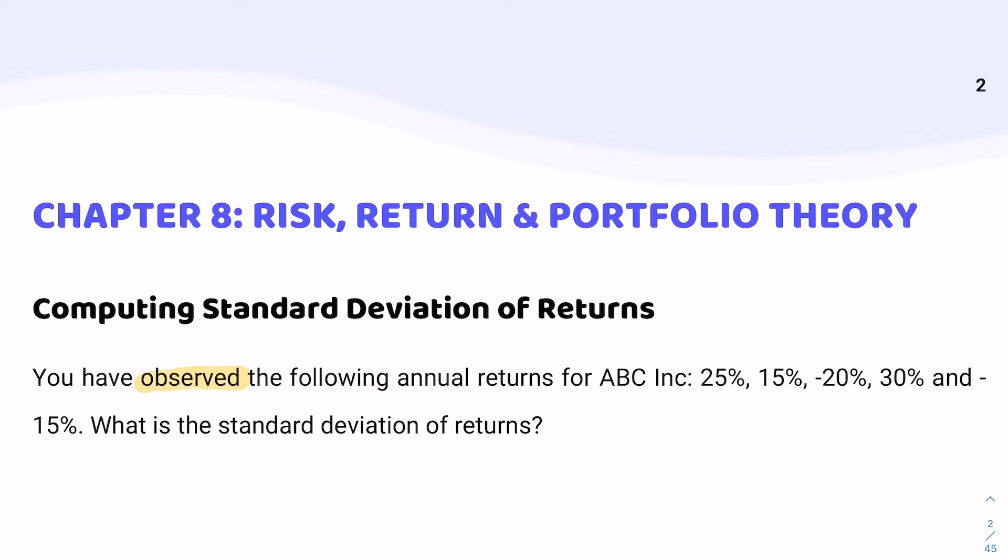When we observe returns, it's typically because we have looked at past data. We don't observe the future, we only observe the past. Therefore, it's very quickly, very obvious that we're dealing with historical data. And when we're dealing with historical data, you definitely know that historical data is equal to ex-post. So we're looking at ex-post returns.